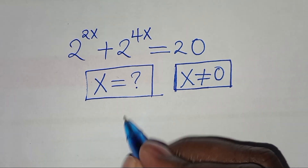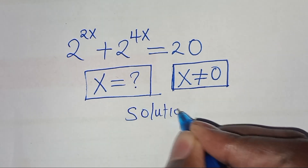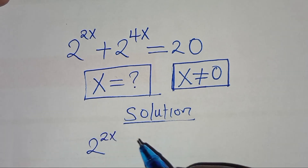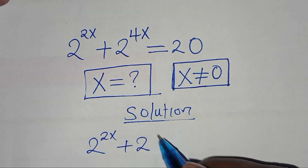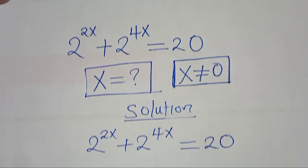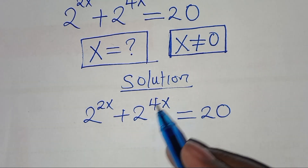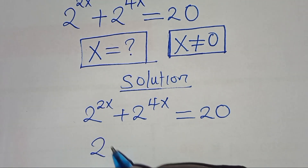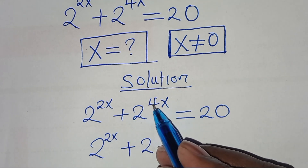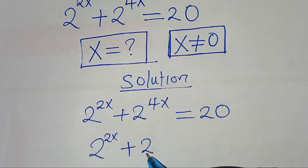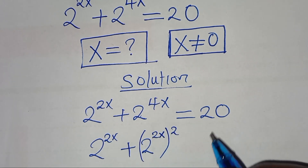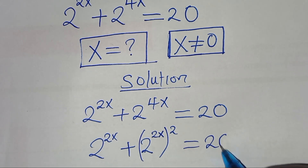Let's present the solution from here. We have 2 to the power of 2x, then plus 2 to the power of 4x, this is equal to 20. Now we have that 2 to the power of 2x plus 2 to the power of 4x — we can express 4x as 2 to the power of 2x raised to the power of 2 — this is equal to 20.